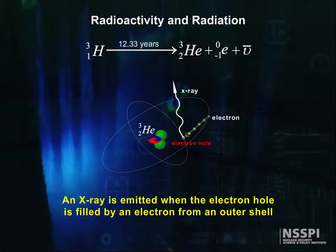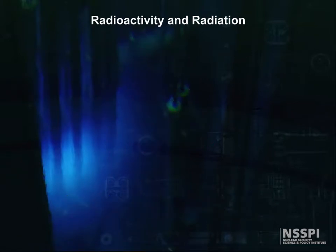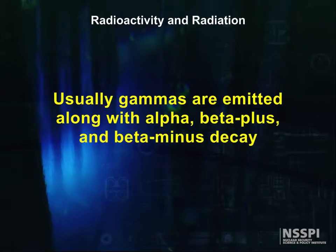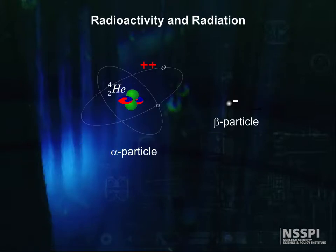Gamma rays can be emitted as the only radiation after a decay, but this is uncommon. Usually, gammas are emitted along with alpha, beta plus, and beta minus decay. Now that we're done with the naming of the particles, let's look a bit closer at the different types of radiation and their characteristics.